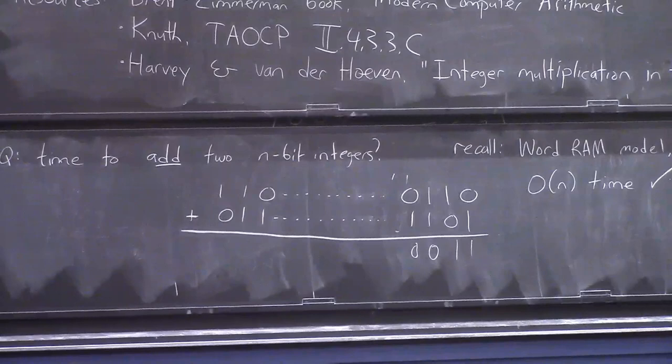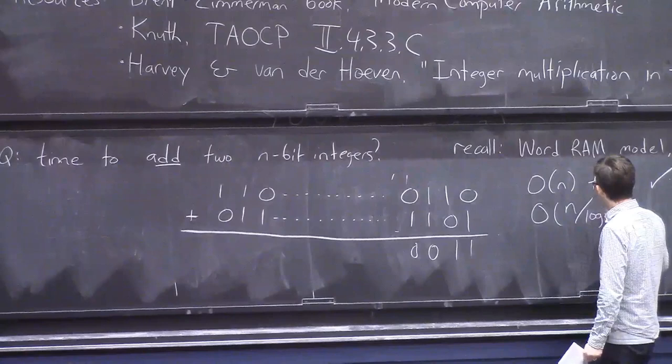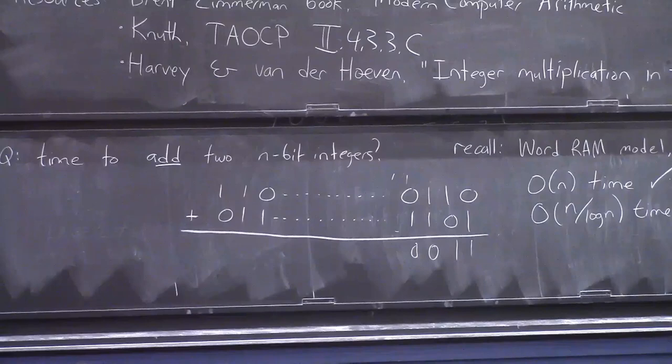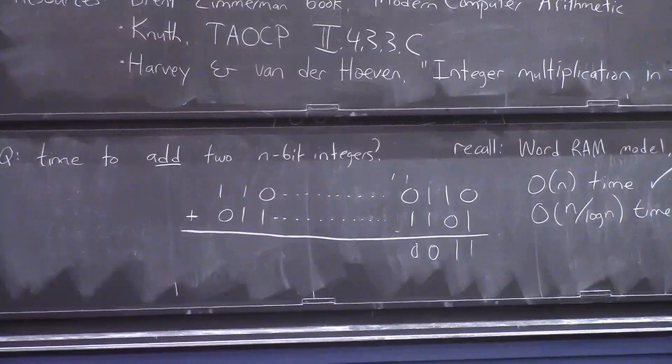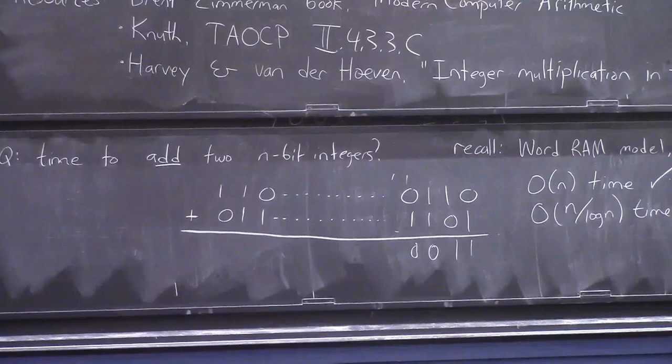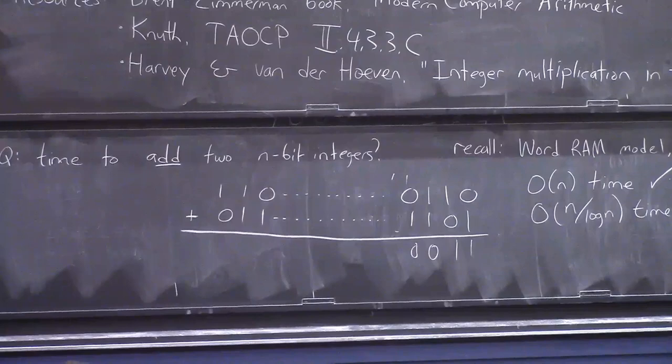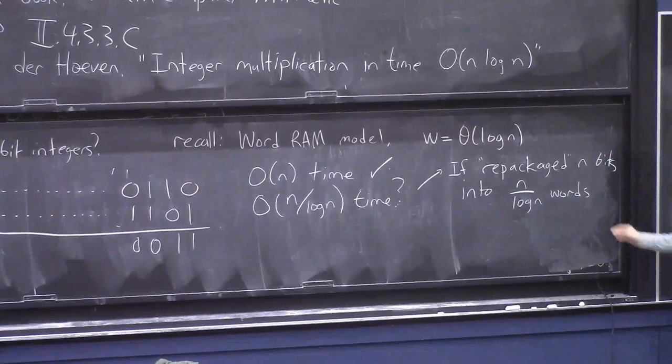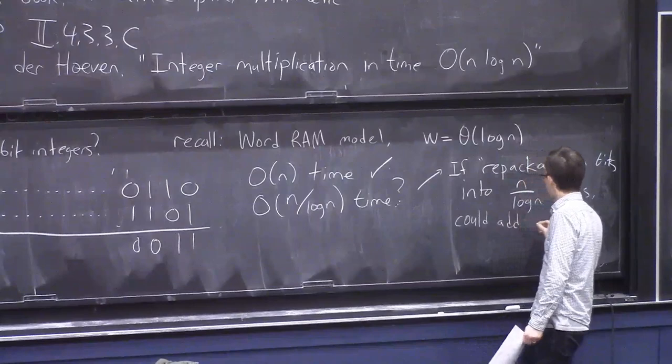And that's pretty clearly order n time. Now, what I want to tell you, actually, is that you can almost do this problem in better time. You can almost sort of do this in n over log n time. Anybody have a clue what I'm getting at here? Yeah, that's right. The point is, in the WordRAM model, you can do basic arithmetic operations in one time step. So let me put a question mark here. If you repackaged these n bits, repackaged n bits, into n over log n words, each of length log n,